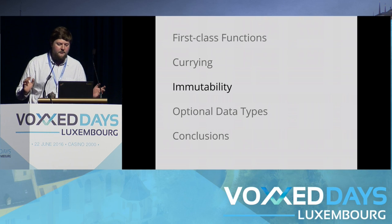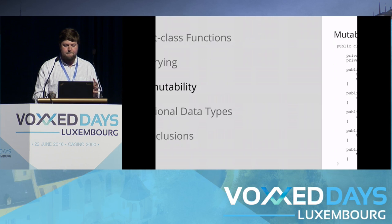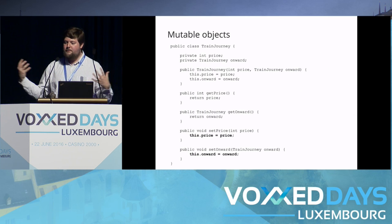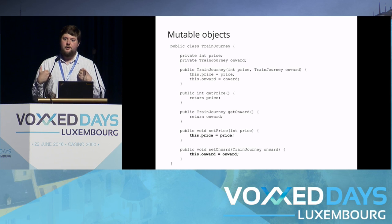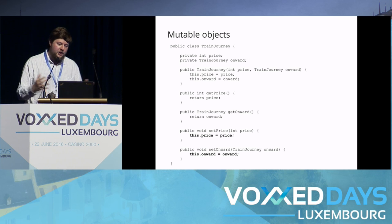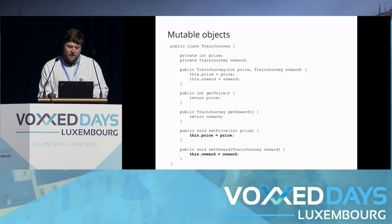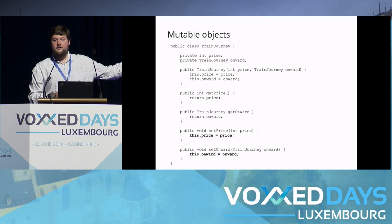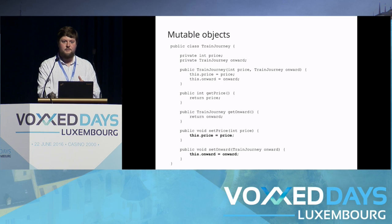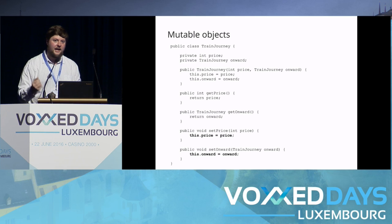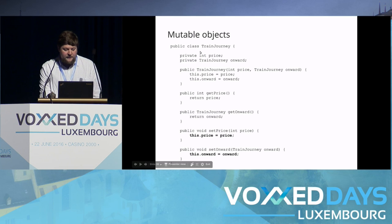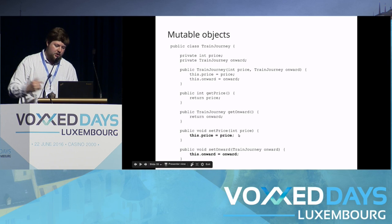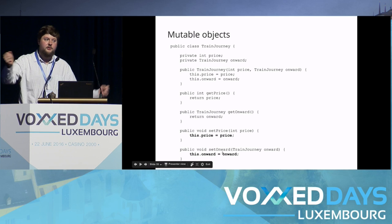Let's talk about immutability. As our running example we're going to talk about train journeys. Being British, it's a national requirement to complain about how bad the train service is — so this will be an example motivated by rage. Our mutable train journey has a price and an onward leg — maybe you're going from Luxembourg to London via train through Paris or Brussels, then Eurostar. We've got getters for price and the onward journey, and what makes this mutable is the setters — set the price and set the onward journey. So if we want to update this object, we change its internal fields.